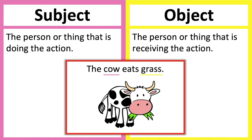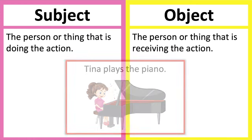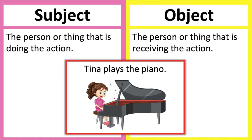Lastly, we can find out the object by asking what does the cow eat. The answer is the grass, so the grass is the object. Tina plays the piano.